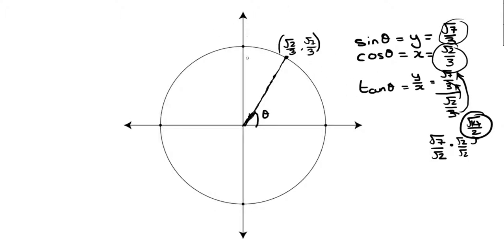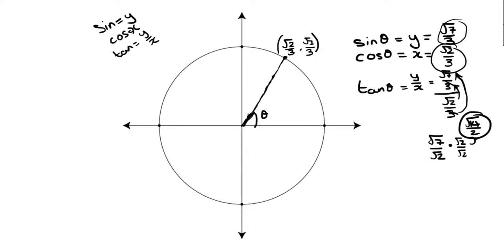You could memorize that sine equals y, cosine equals x, and tangent equals y over x. But it's not going to really help you unless you know the underlying concepts behind it, which we talked about in the previous video. It's important to know how you get a certain derivation rather than just blindly memorizing it.